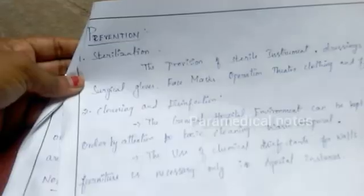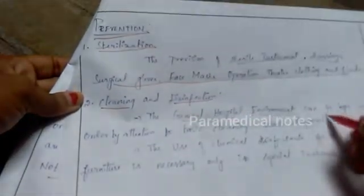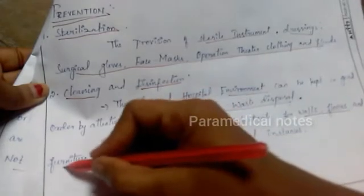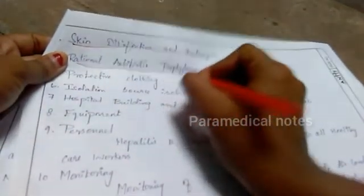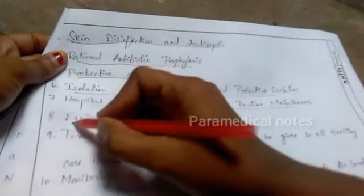Prevention is a very important and favorite topic. First point is sterilization — sterilize instruments, surgical clothing, face masks, and everything used in hospital. Second is cleaning and disinfection — walls, floors, and all surfaces should be cleaned and disinfected. Third is skin antiseptics — skin disinfection and antiseptic application.